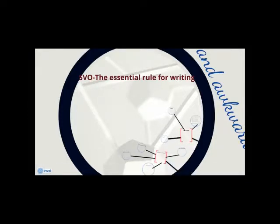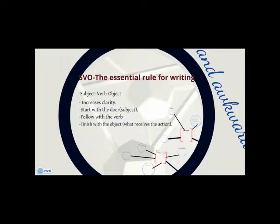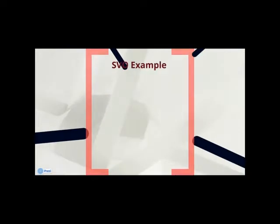Clarity begins with your sentence structure. If you have a confusing or awkward sentence, it's best to find its basic elements and write it in a simple subject-verb-object construction. Start with a subject that performs the verb, then follow with the verb, and finally finish with the object which receives the action of the verb.